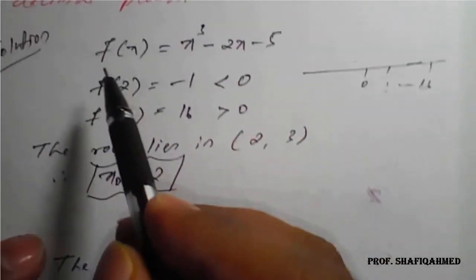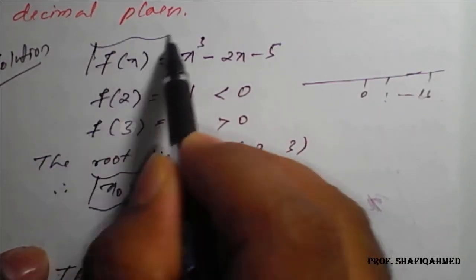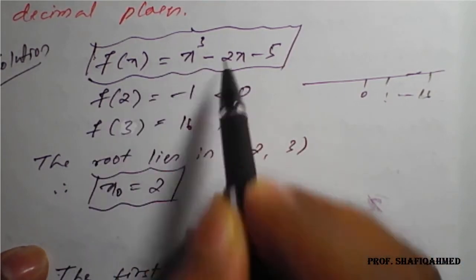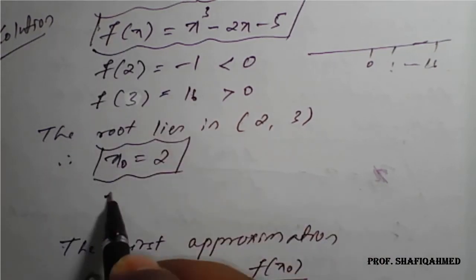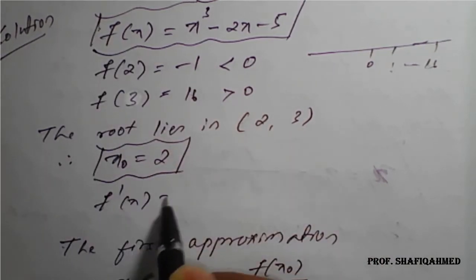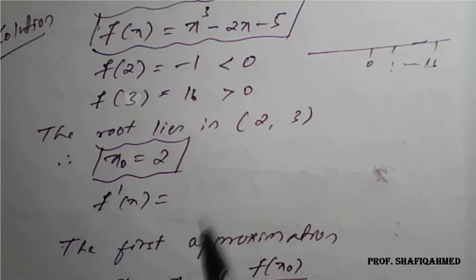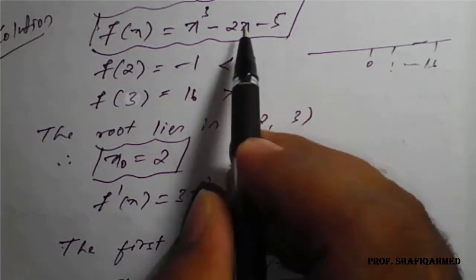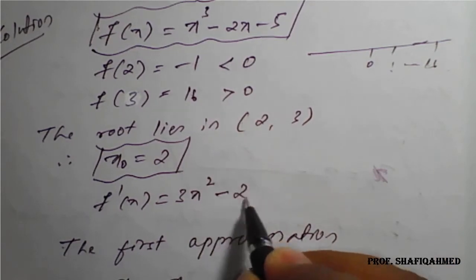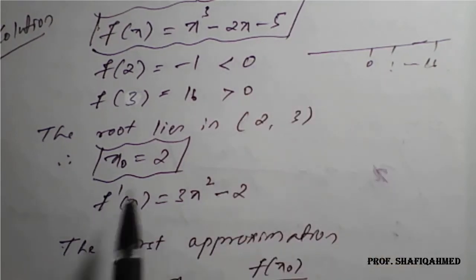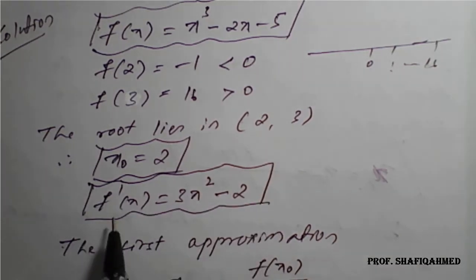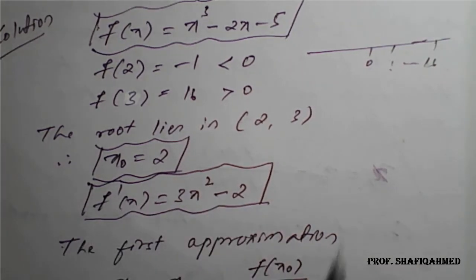The given f of x needs to be differentiated with respect to x. Differentiating: f dash of x becomes 3x squared minus 2, since the derivative of x cubed is 3x squared, derivative of 2x is 2, and derivative of minus 5 is 0.